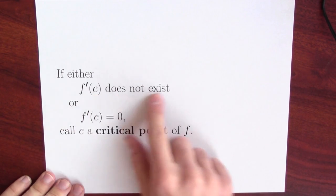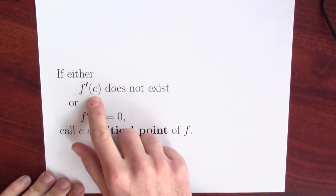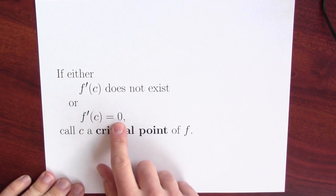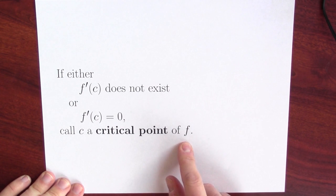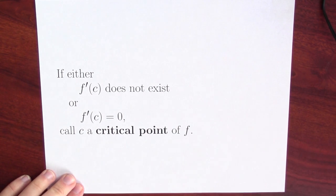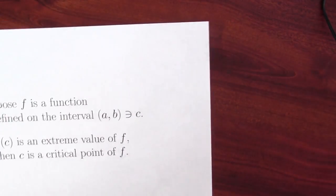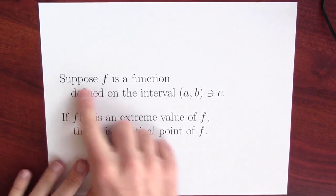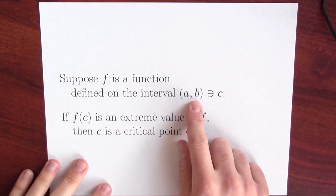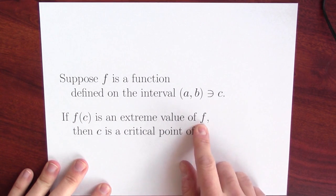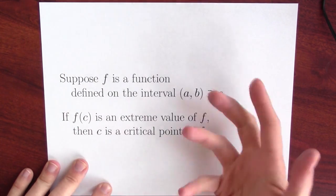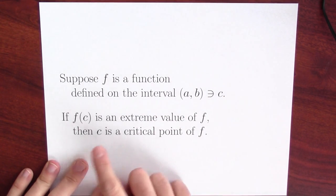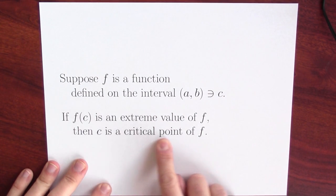We'll often want to talk about these two cases together — the situation where the derivative doesn't exist and the situation where the derivative vanishes. Let's give a name to this phenomenon. If either the derivative at c doesn't exist, meaning the function is not differentiable at c, or the derivative is equal to 0, then I'm going to call the point c a critical point for the function f. This is a great definition because it fits so well into Fermat's theorem. If f of c is an extreme value of f, then at that point either the function is not differentiable or the derivative is equal to 0 — and that's exactly what we mean when I say that c is a critical point of f.